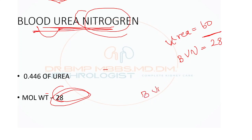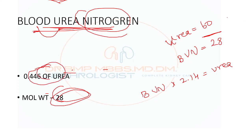The conversion formula is: BUN × 2.14 = Urea, or equivalently, 0.446 × Urea = BUN. So urea always has a bigger numerical value than BUN.